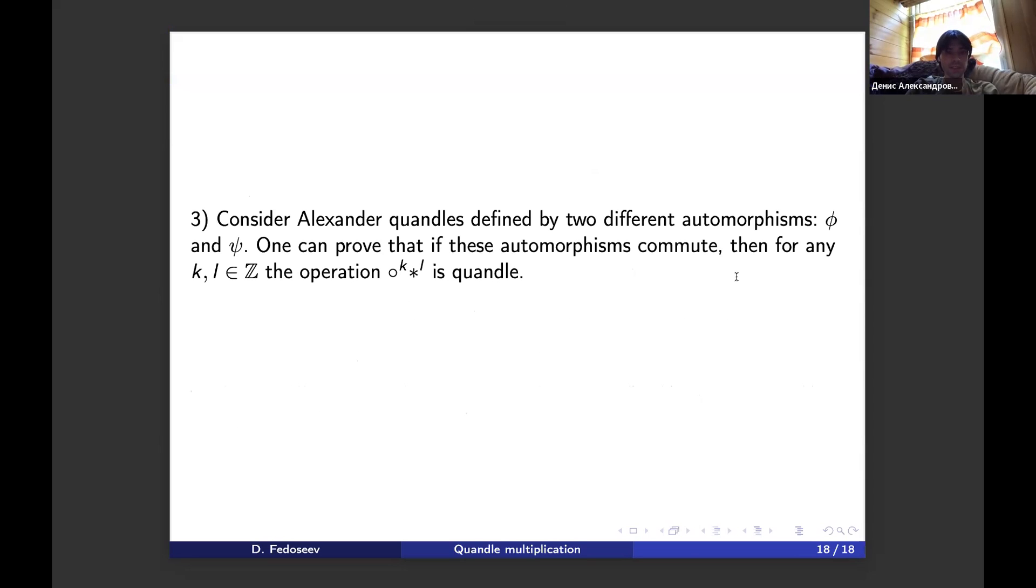One more example: let us consider Alexander quandels defined by two different automorphisms phi and psi. One can prove that if these automorphisms commute, then for any k, l in the integers, the operation circle to the k, star to the l is a quandel. Again, we have a group defined by two automorphisms.